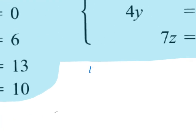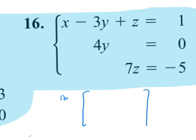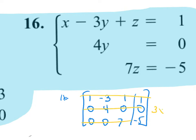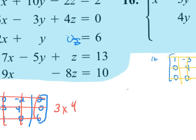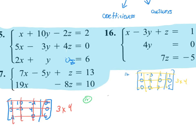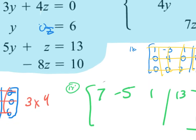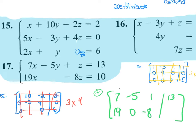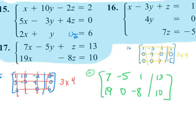For number 16, the augmented matrix is: one, negative three, one, and one — then continue the remaining rows. The dimensions are three by four. For number 17, the matrix is: seven, negative five, one, thirteen — and then nineteen, zero, negative eight, and ten. The dimensions are a two by four — left and right first, then up and down.